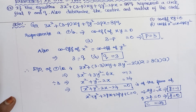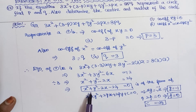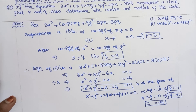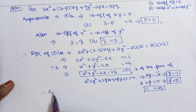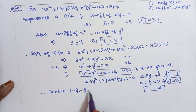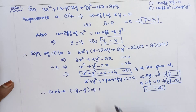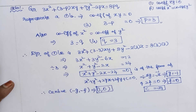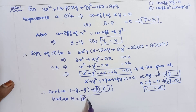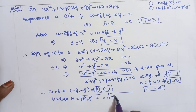The center of the circle is given by the formula (-g, -f). Comparing with the general form, 2g = -2 so g = -1. Therefore the center is (-g, -f) = (1, 0). The radius formula is √(g² + f² - c). Substituting: g = -1, f = 0, c = -24.